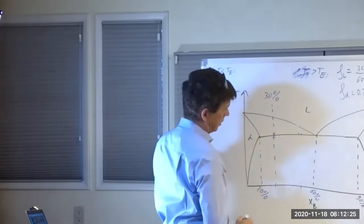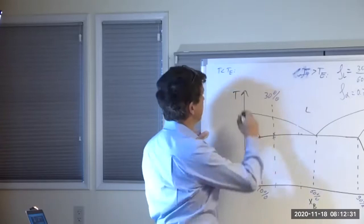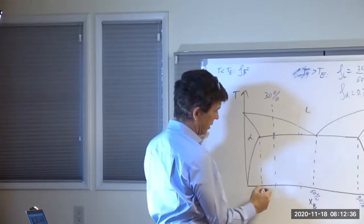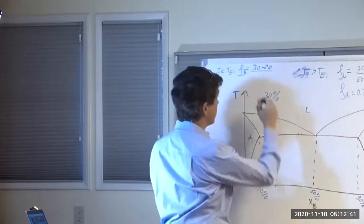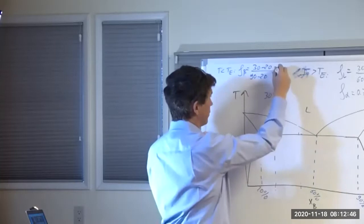Just below the eutectic, you clearly have a lot more alpha because your composition is much closer to alpha. The fraction of beta would be 30 minus 20 divided by 90 minus 20, which is 10 divided by 70, so 1/7.